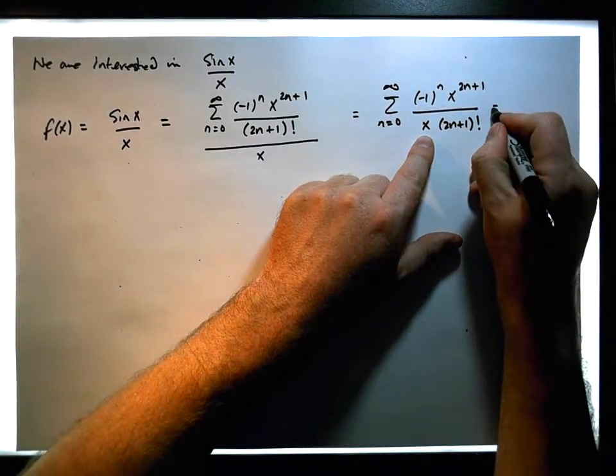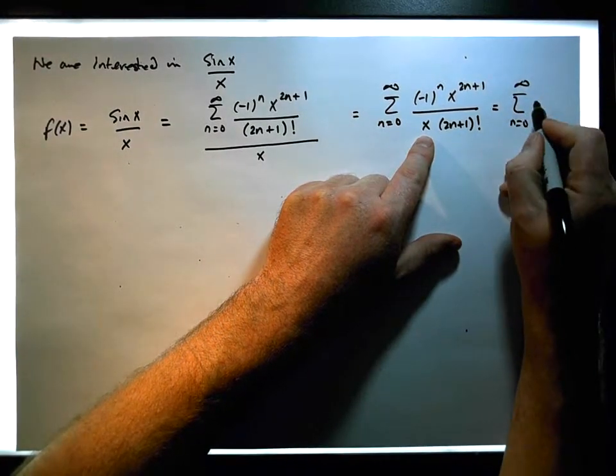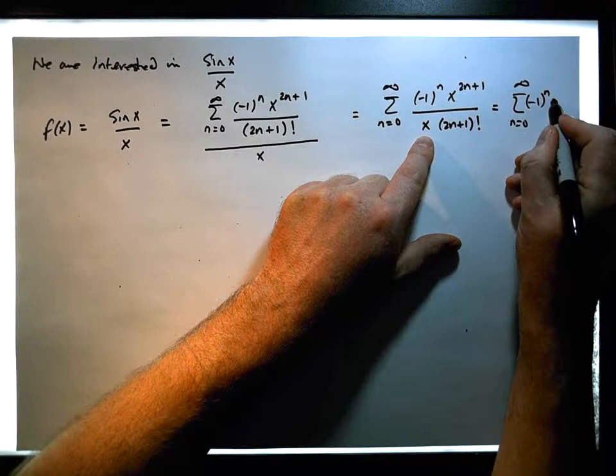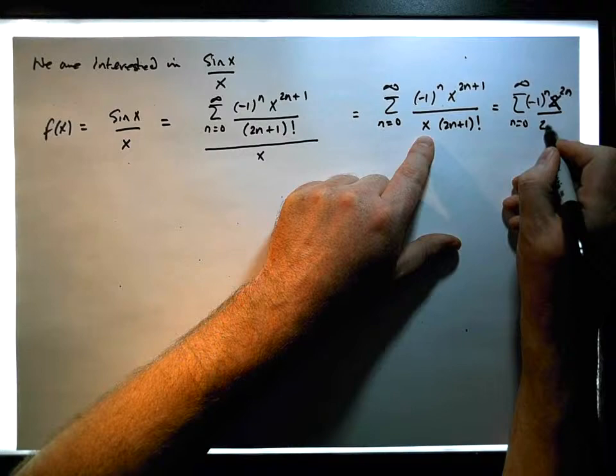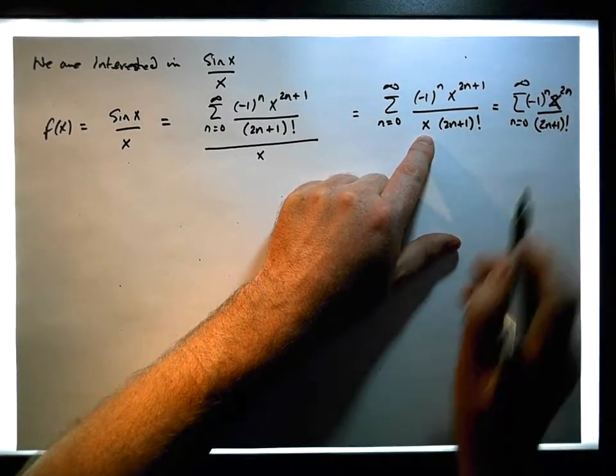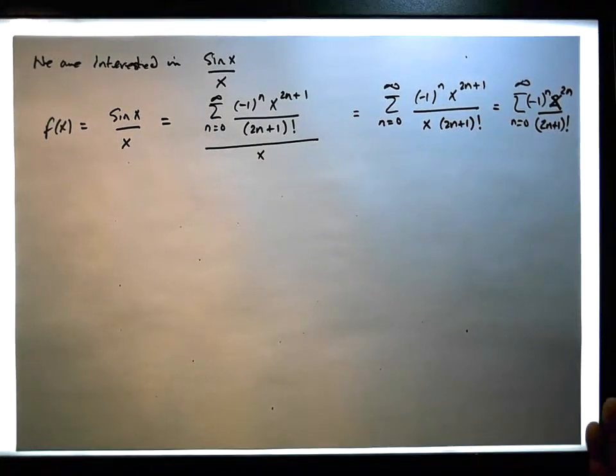And this basically now gives us the summation, from n equals 0 to infinity, of minus 1 to the n of x to the power of 2n, over 2n plus 1 factorial. So effectively, this function can be represented like this. So now we're ready to go.